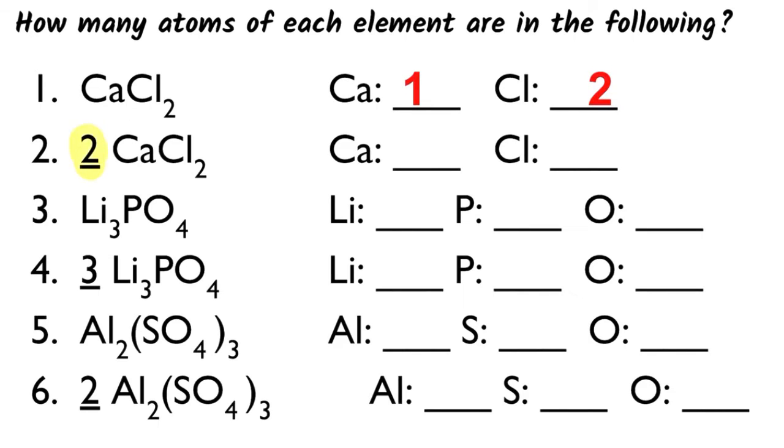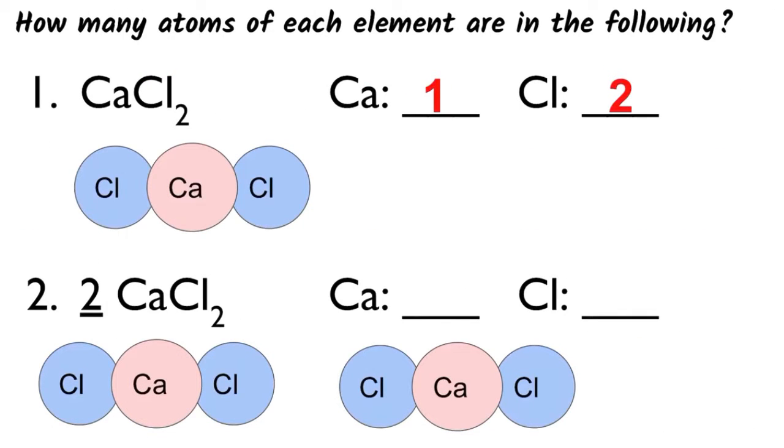In the second problem, I have 2 CaCl2. I have essentially just doubled the number of overall particles. I have two particles of Ca bonded to two Cls. So I'm going to multiply that coefficient by that subscript. Two times one is two, two times two is four. Notice I could also draw the particles to figure out how I'm going to determine the number of atoms of each element.